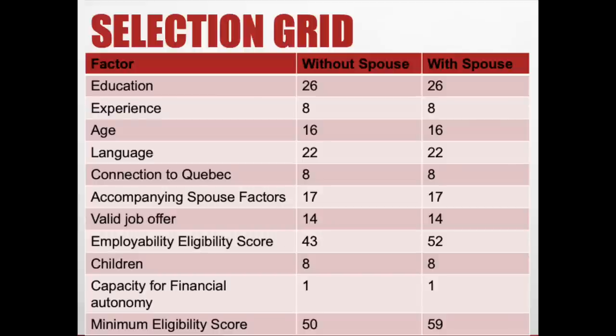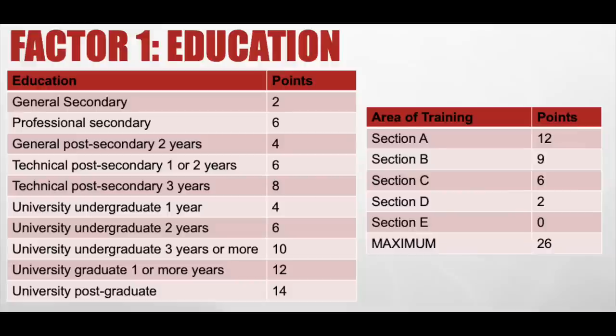The selection grid here is different from Express Entry. Single applicants need a minimum of 50 points; married applicants need 59 points. Factor one is education — a university postgraduate gets the maximum 14 points. There is also the area of training, which is divided into five segments from Section A to Section E, with Section A giving the maximum points. The total maximum points for areas of training is 26.